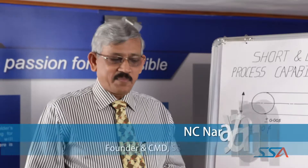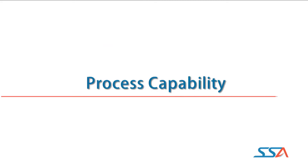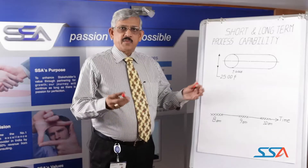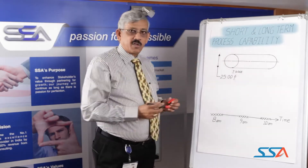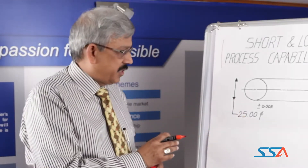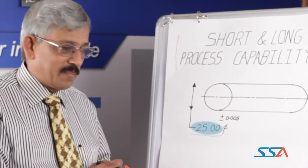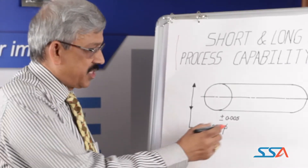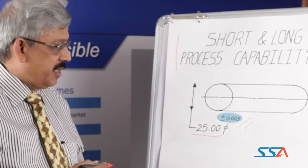Hi, I am NC. Let me welcome you to the session on Process Capability today. What we are going to look at today is the difference between the short-term and long-term process capability. Let's take an example of a shaft which is 25 mm diameter and has got a tolerance of plus or minus 0.005 mm.